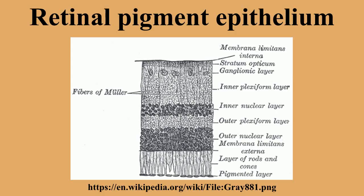When viewed from the outer surface, these cells are smooth and hexagonal in shape. When seen in section, each cell consists of an outer non-pigmented part containing a large oval nucleus and an inner pigmented portion which extends as a series of straight thread-like processes between the rods, especially when the eye is exposed to light.